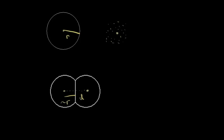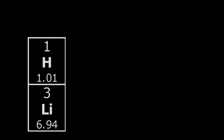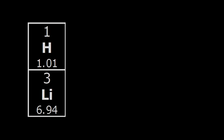Let's look at the trends for atomic radius, starting with group trends. Here we have two elements in group one: hydrogen and lithium. Starting with hydrogen, which has an atomic number of one, that means it has one proton in the nucleus. In a neutral atom, the number of protons equals the number of electrons, so there must be one electron. We'll sketch in our electron here, showing this simple version of the atom.